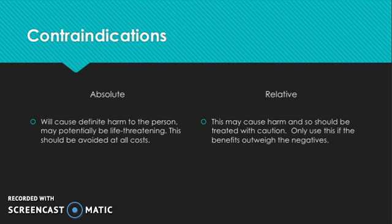An absolute contraindication is quite non-negotiable — it's more or less definitely going to cause harm to the person, which may potentially be life-threatening, and therefore it should be avoided at all costs. Whereas a relative contraindication is somewhat more flexible, whereby the treatment or exercise may cause harm and should be treated with caution, but it can still be used. The general rule of thumb is that it should only be used if the benefits outweigh the negatives.